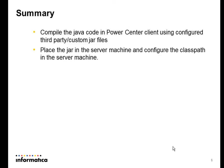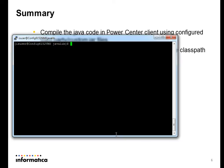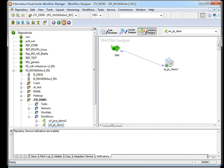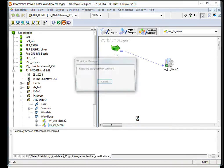To summarize: compile the JAR code in the PowerCenter client with the configured third-party or custom JAR files, then place the JAR files in the server machine and configure the class path in the server machine. I have placed the jdxdemo.jar, which is a built-in JAR, in the javalib directory. You can then run the JAR transformations using the start workflow.